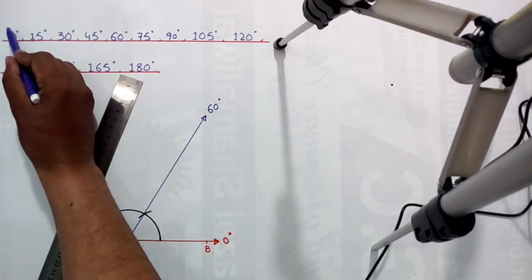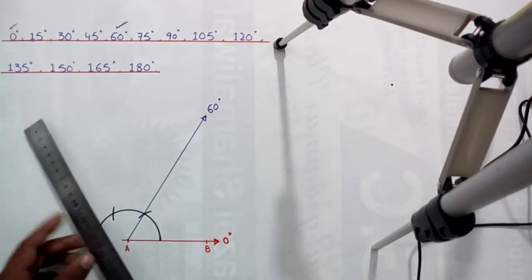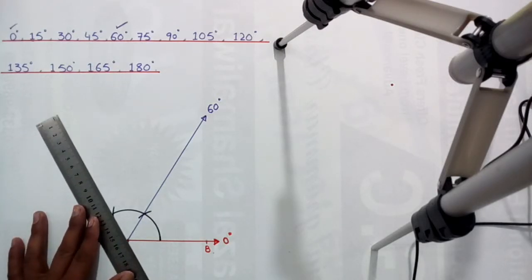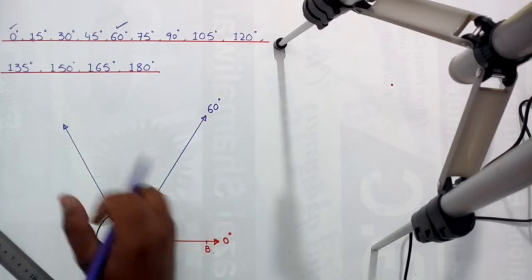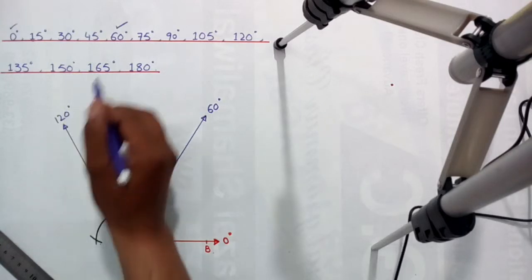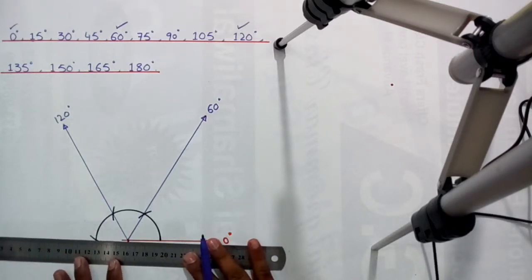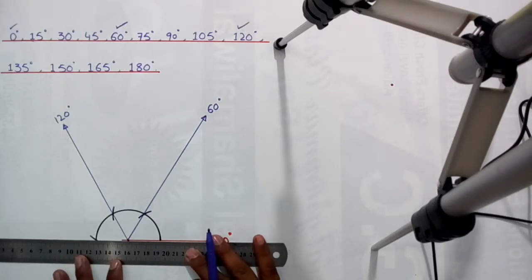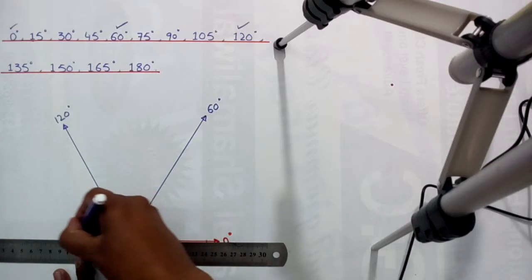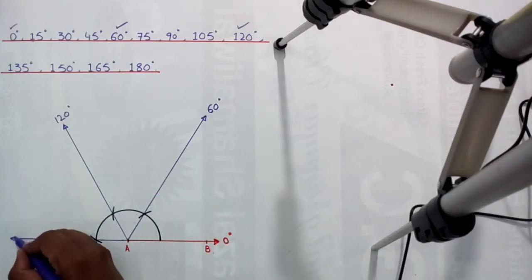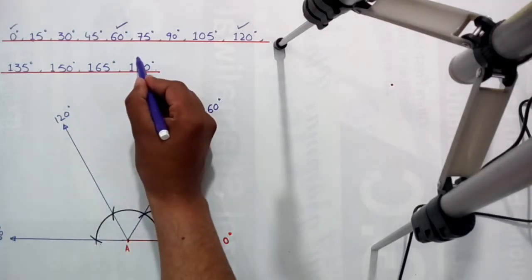We have covered 0 degrees and 60 degrees. Now join this point with the second arc point — 60 plus 60 equals 120 degrees — so 120 degrees is also covered. Now join with the third point: 60 plus 60 plus 60 equals 180 degrees, so 180 degrees is also covered.